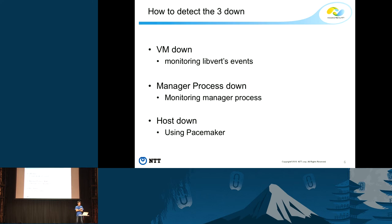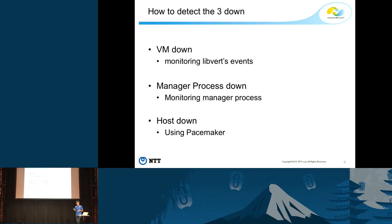As I mentioned before, the monitoring process detects three types of virtual machine down. First is virtual machine down — the monitoring process monitors libvirt events. Second is to detect when the manager process is down — our monitoring process checks whether the manager process is working well or not. Finally, to detect host down, we are using Pacemaker. I'll show you a quick overview of how each down type is detected.